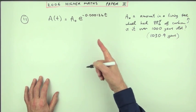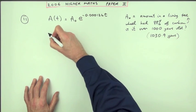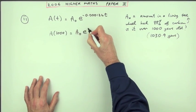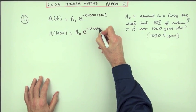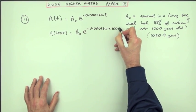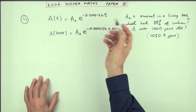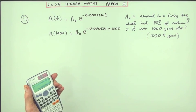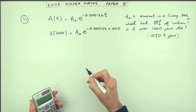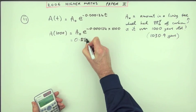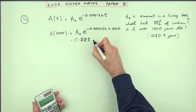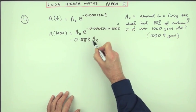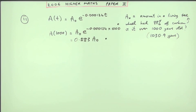You could say what percentage would I have for a thousand years? Well A of a thousand would be A0 e to the negative 0.000124 times a thousand. Now that's just a calculation. So you type all this in and you get 0.8833. So that equals 0.883 of A0. Now doing this so far gets a mark, finding 0.883 gets a mark.